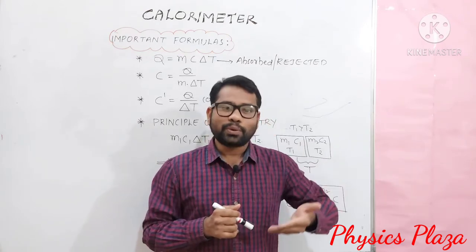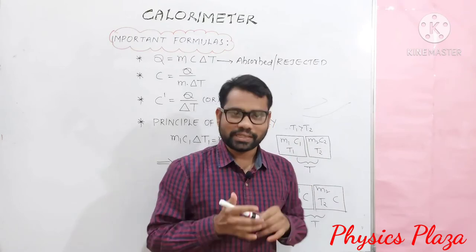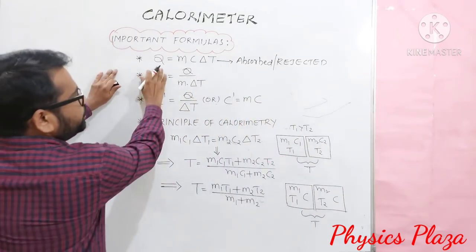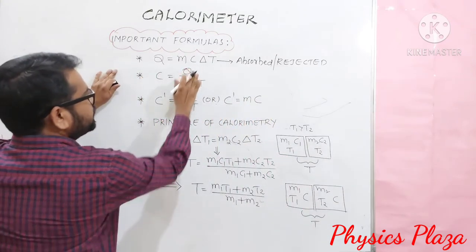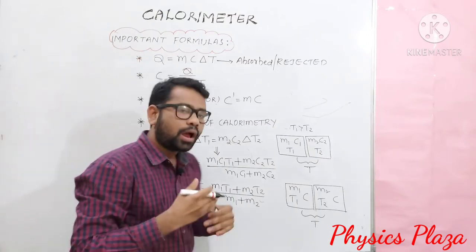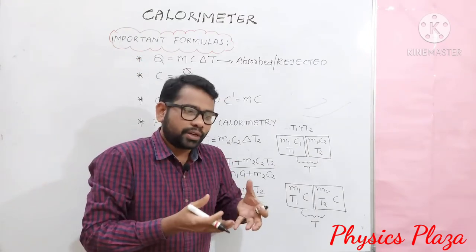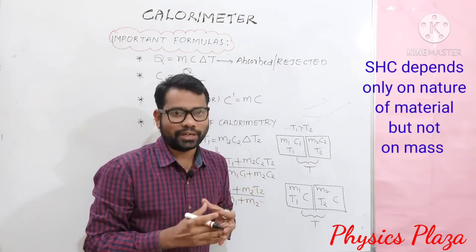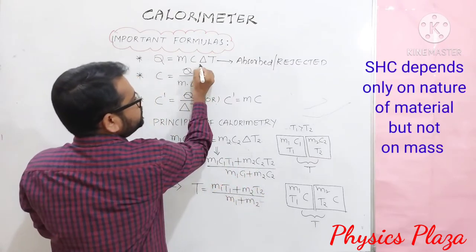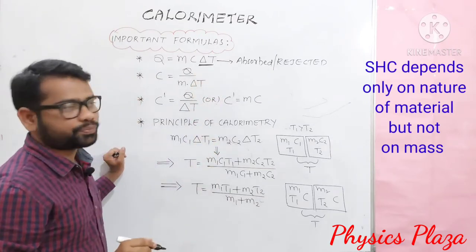In order to solve the numericals, what are the formulas which we are going to use? Let us recall that. Here Q is equal to mc delta t. This formula we use to calculate the amount of heat energy required — the amount of energy absorbed or rejected. The condition is that there should be some change in temperature, then only we use it.